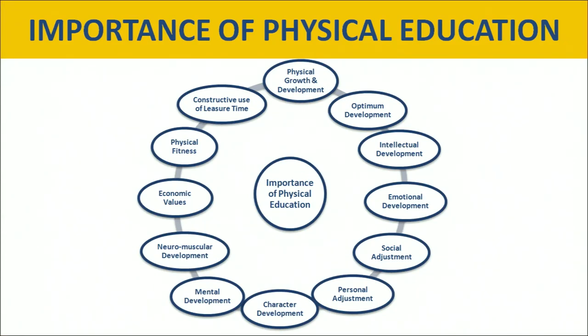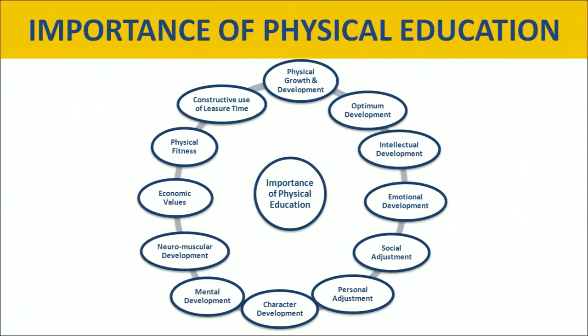There are various aspects of importance of physical education, as shown in the image on your screen. The first aspect is physical growth and development — physical activity is a necessary step to develop the proper function and growth of the human body. Optimum development: physical education helps to improve physical, mental, social, and emotional development by participating in physical activities.